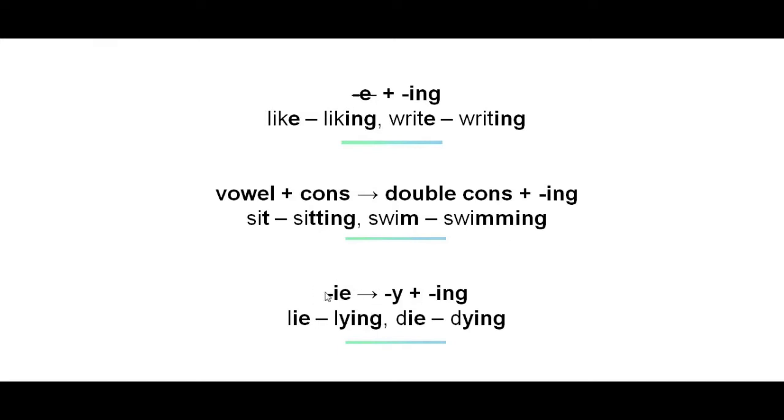And when a verb ends in ie, we change the ie into y and then add -ing, as in lie, lying, die, dying.